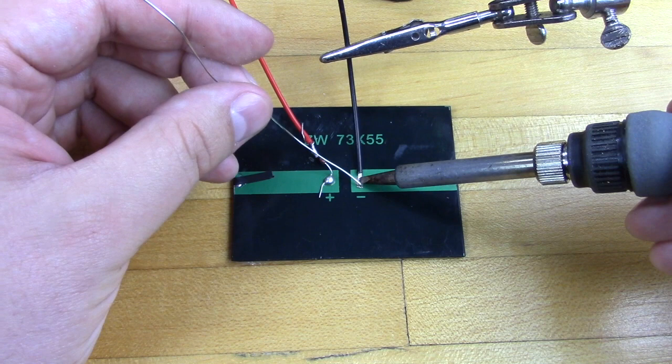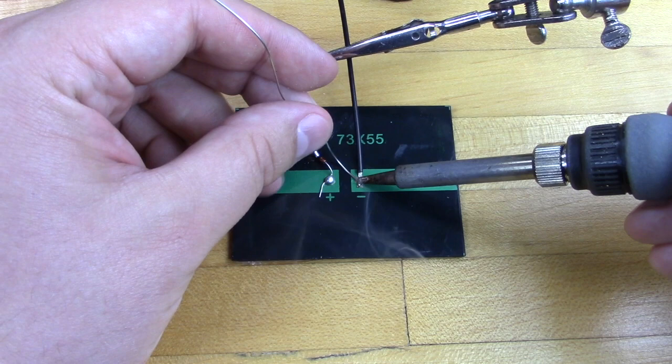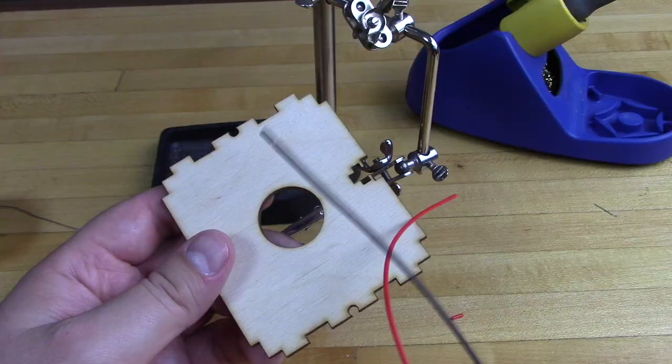Using the same technique as before, use your helping hand to take a black wire and line it up with the negative terminal on your solar cell. Apply heat and apply solder and get that hooked up nice and secure.